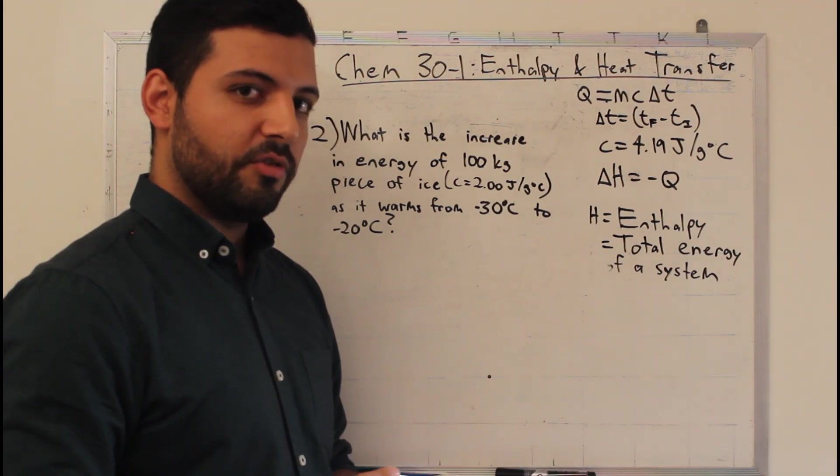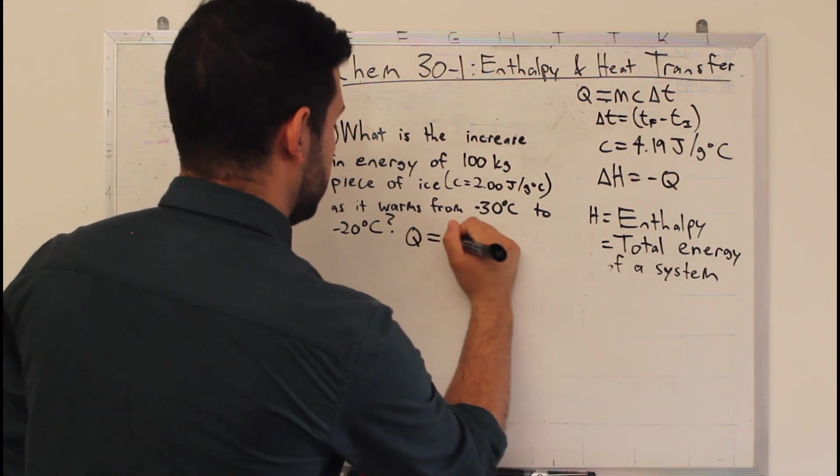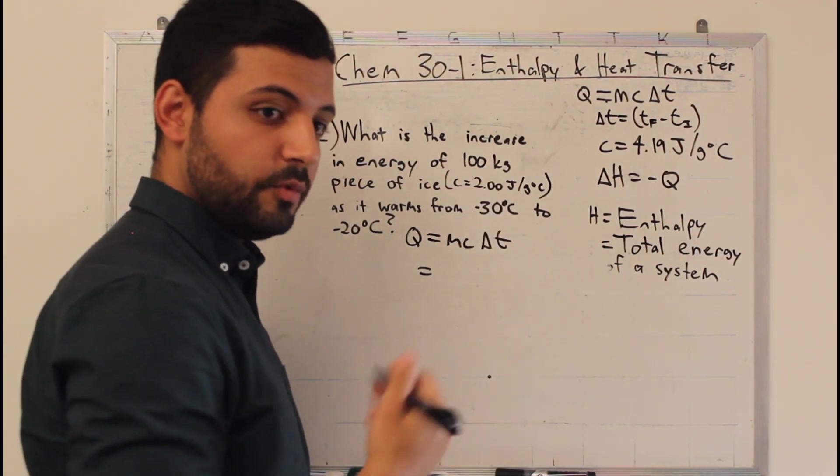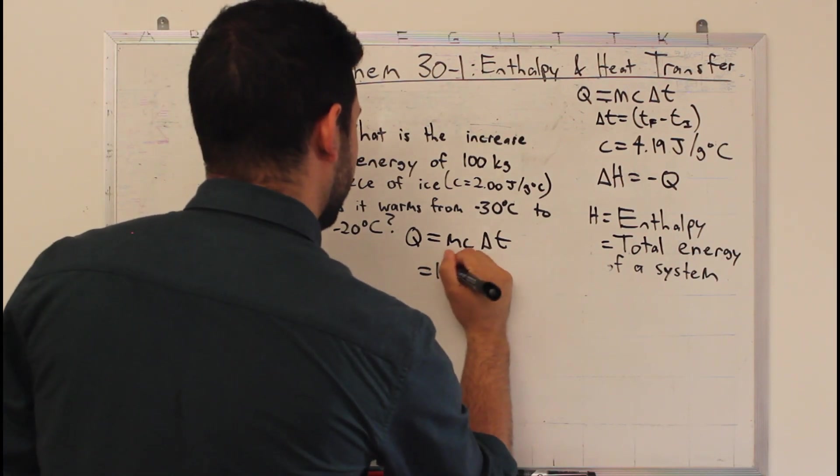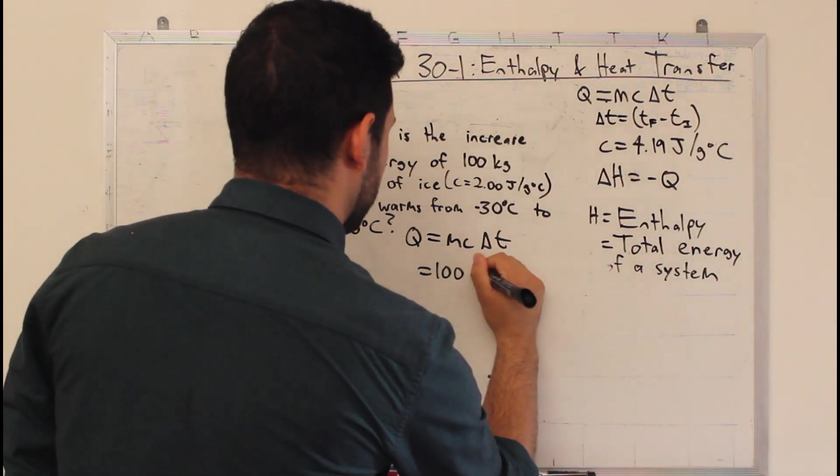But the overall concept is still the same, so we have our equation, Q equals mc delta t. Our mass, 100 kilograms, we need to change into grams. There's a thousand grams in one kilogram, so we add three zeros.